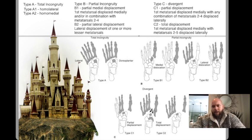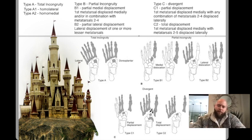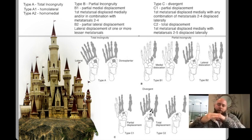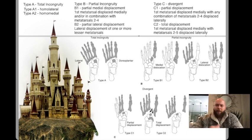Another high yield is that the most common dislocation direction — either dorsal or plantar — is dorsal, and why is that? It's because the dorsal ligaments of the tarsal metatarsal joints are the weakest, so often the metatarsals will pop up dorsally. Other than that, this is pretty much all the high yields, and you'll just need to repeat this over and over to get it down, but the images display it pretty well.